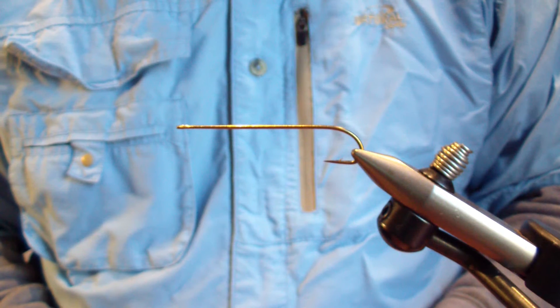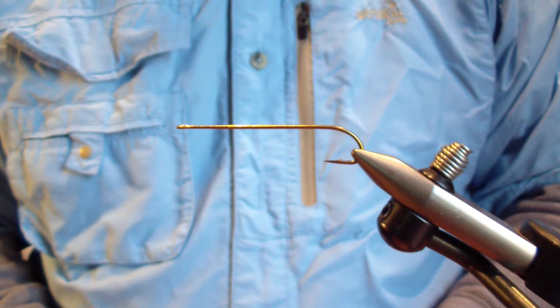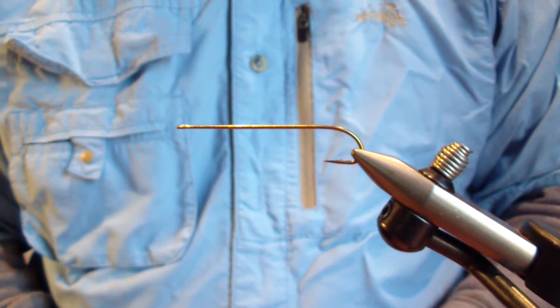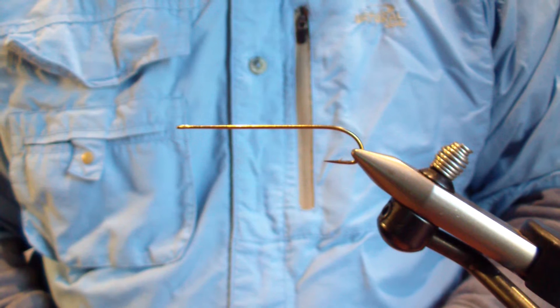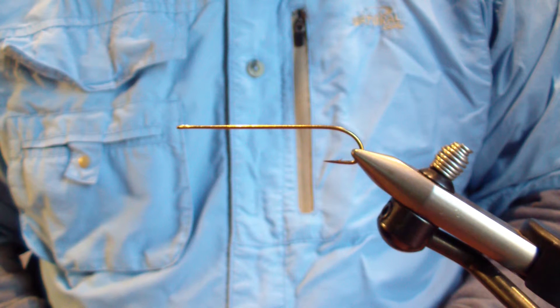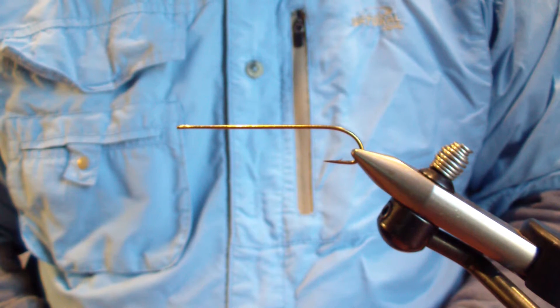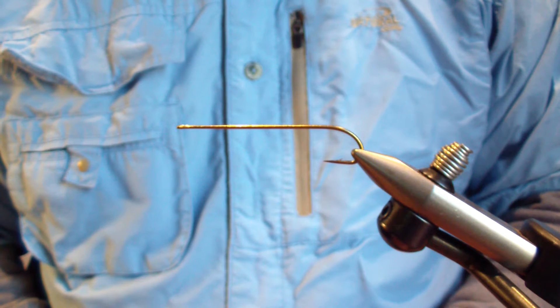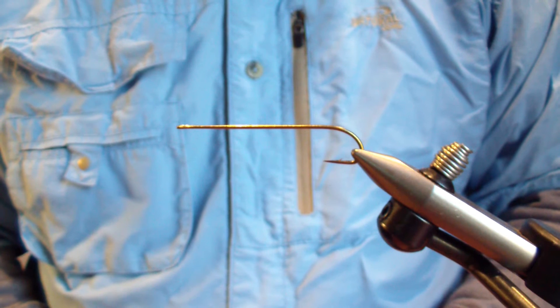This by no means is saying these are better. Everyone has different techniques. There's a million different tools out there for building dubbing loops. Some people like the tools, some people don't use them at all. I use more of an old school method of hackle plier and shepherd's hook. But this is how I do it.